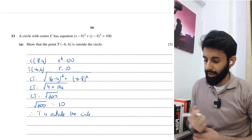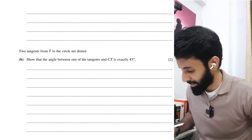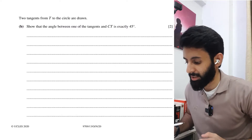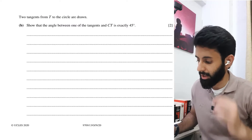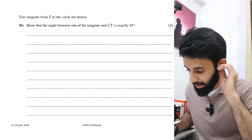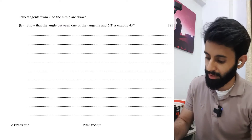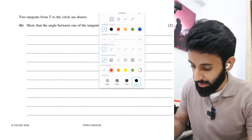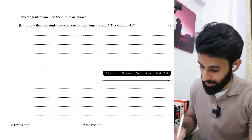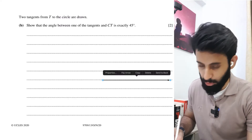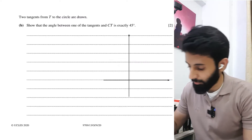That was part a. Moving to part b: two tangents from T to the circle are drawn. We need to show that the angle between one of the tangents and CT is exactly 45 degrees. It's always a good idea to make a rough sketch so you know exactly what you're dealing with.